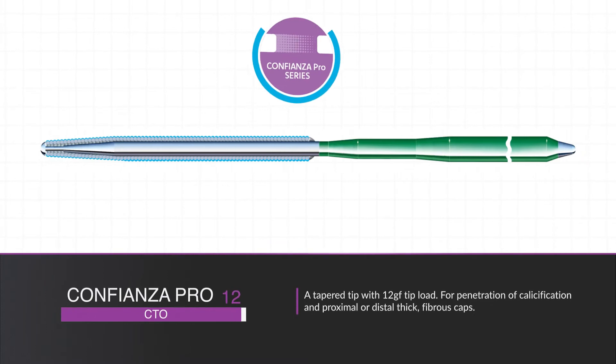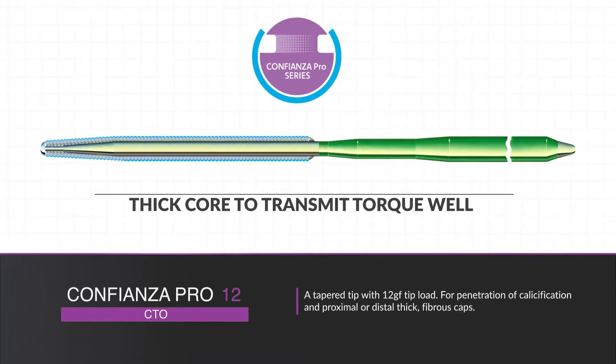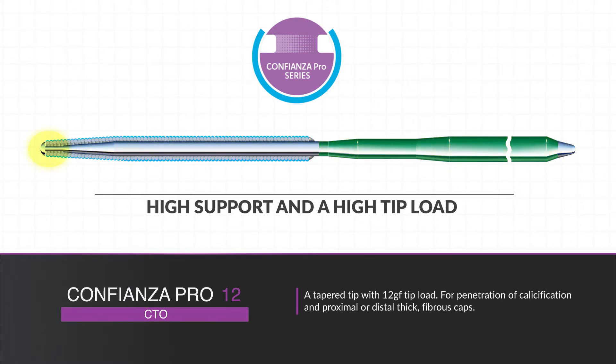The Confianza Pro 12 is an example of an extremely stiff guide wire. Built with a very thick core to transmit torque well, Confianza Pro 12 provides both high support and a high tip load. This all comes together with a tapered tip to provide an even higher penetration force.